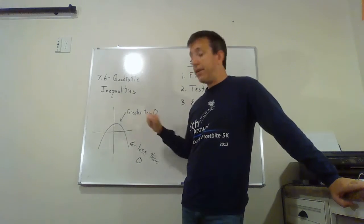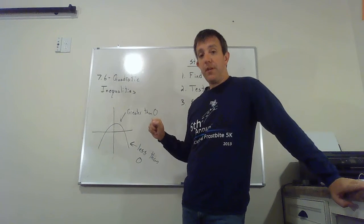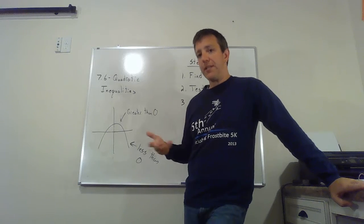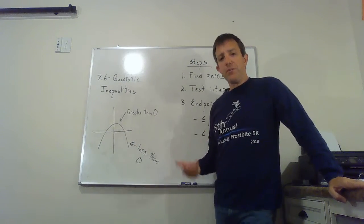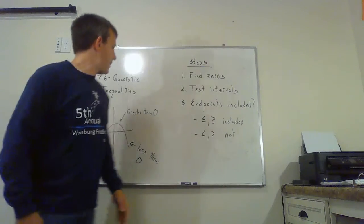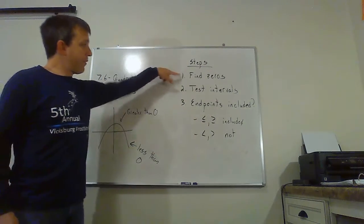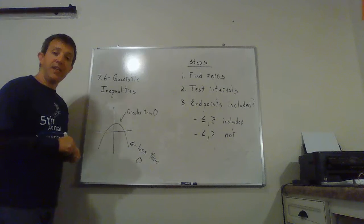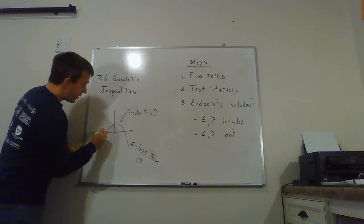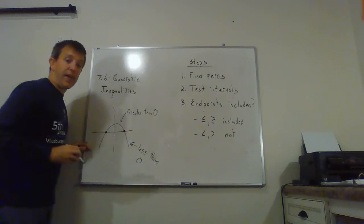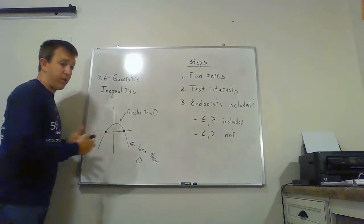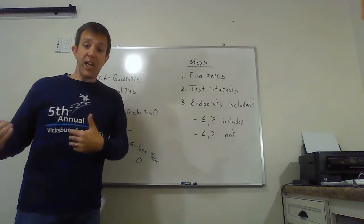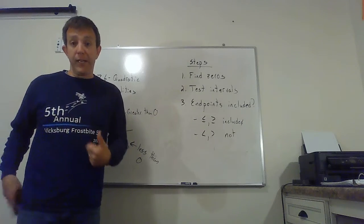That's how we're going to go about doing this. We're going to start by finding those zeros, and then we're going to figure out where it's positive and negative. Here's the steps we're going to go through. First, we're going to find those zeros. We need the values where the graph hits the x-axis, because once we have those, we have the boundaries.